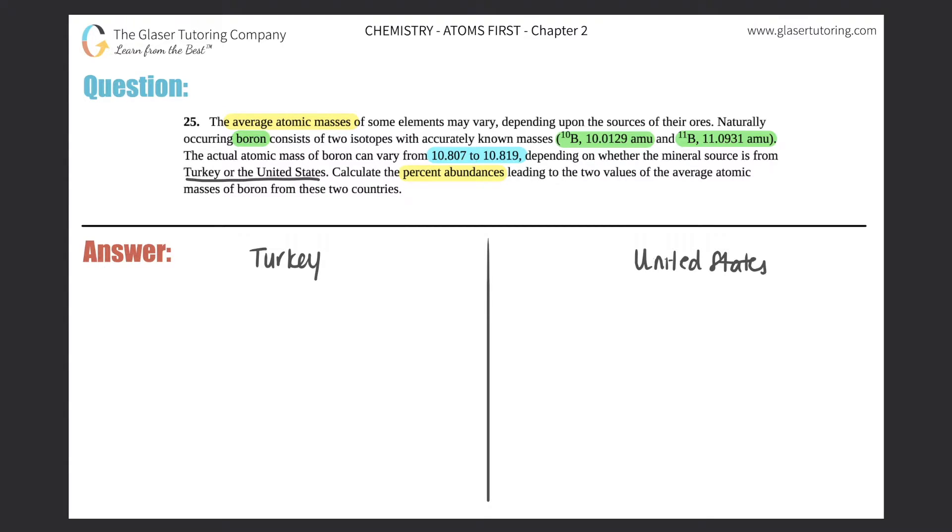Here we still have two isotopes of boron. So for each one, Turkey and the United States, there's two isotopes. We have boron-10 and we have boron-11. Now they tell us their masses, right? 10.0129 AMU and 11.0931 AMU. So I'm going to list that: 10.0129 AMU and 11.0931 AMU.